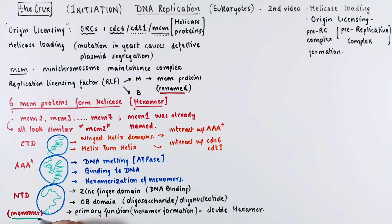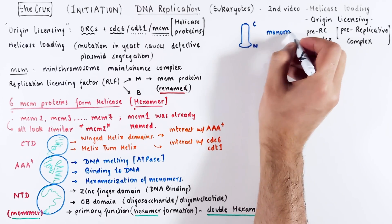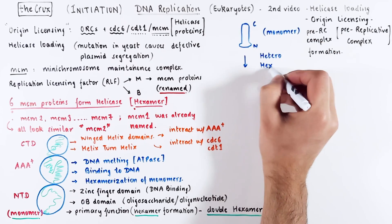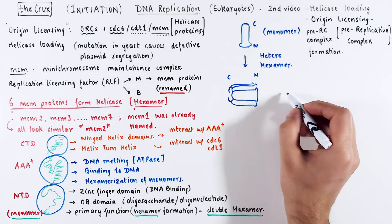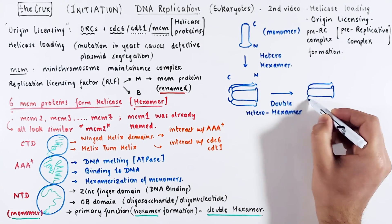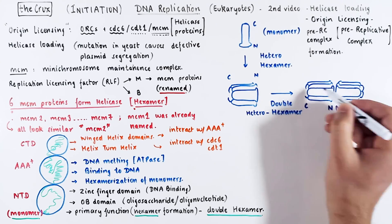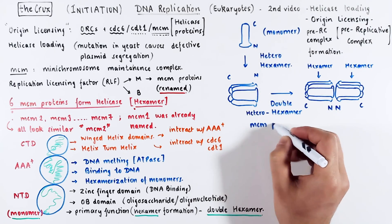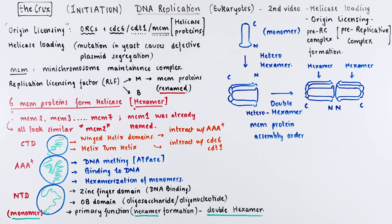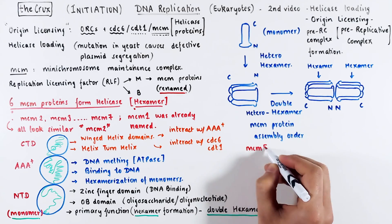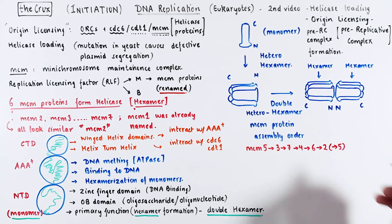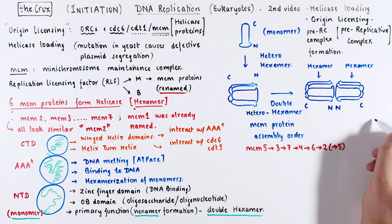Okay, so there is a hexamer and then there is a double hexamer. Essentially, what we will see in the helicase loading is that the monomer will form a heterohexamer. Then this hexamer will form a double hexamer using its N-terminal domains. So a double hexamer is just two hexamers back-to-back. Now, just like we saw with orcs, the MCM proteins also have an assembly order. It looks something like this.